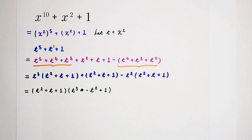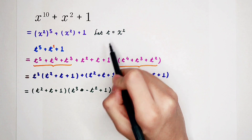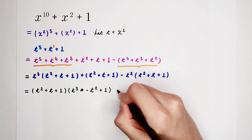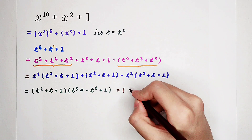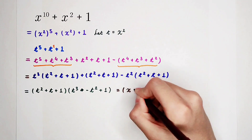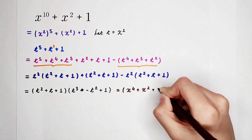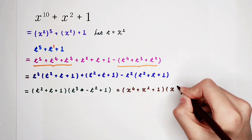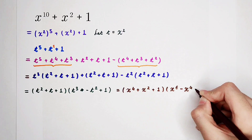Why? Since t is x squared, we should substitute it back. So this term becomes: (x squared) squared plus x squared plus 1, which is x to the power of 4 plus x squared plus 1. And then times: t cubed is (x squared) cubed, which is x to the power of 6, minus x to the power of 4, and then plus 1.